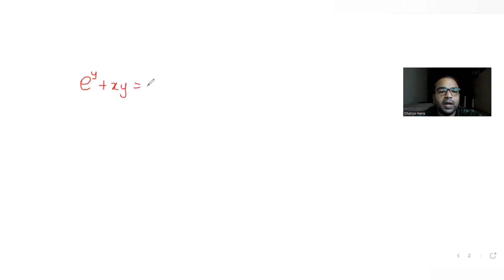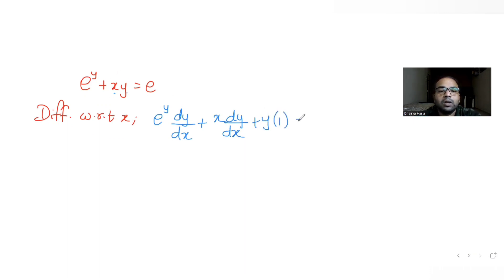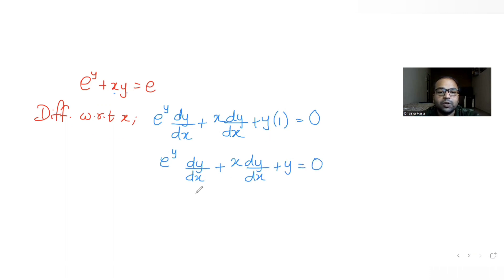Now, differentiating e raised to (y + x·y) = e with respect to x: I get e raised to y times dy/dx, plus the derivative of the product x·y, which gives x·(dy/dx) + y·1. The derivative of e (constant) is zero, so we get: e^y·(dy/dx) + x·(dy/dx) + y = 0.